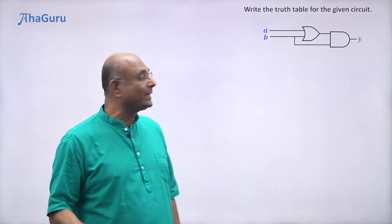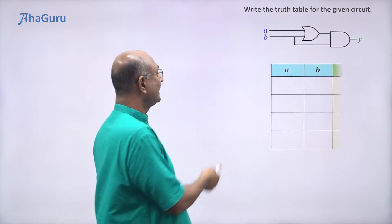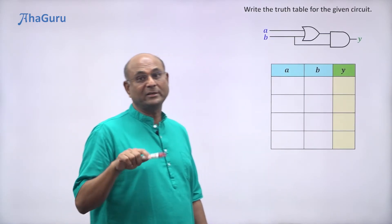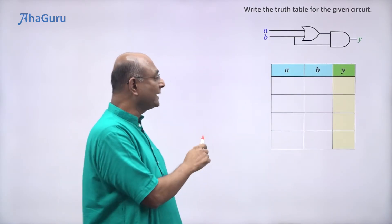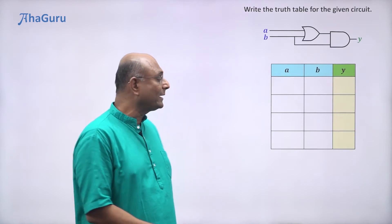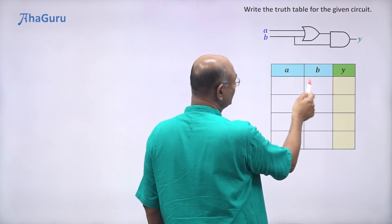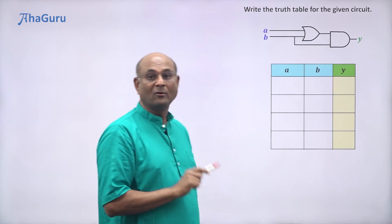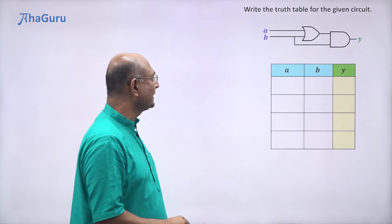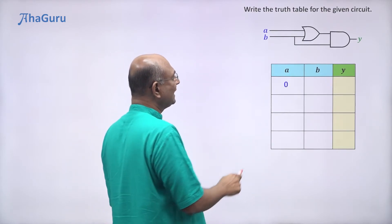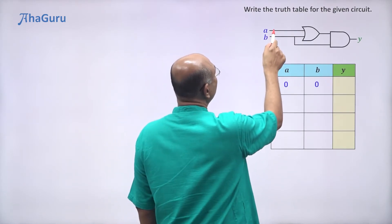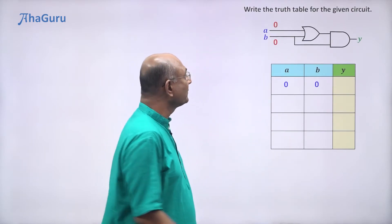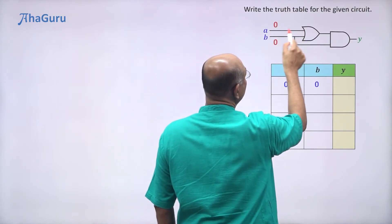So let us set up a table. A can be zero or one, B can be zero or one, so the combinations will be: zero-zero, zero-one, one-zero, and one-one — four possibilities. Let us start with the first one: A=0, B=0.